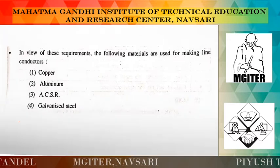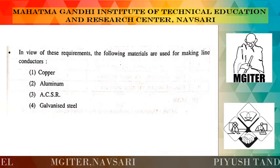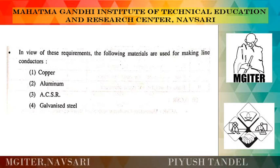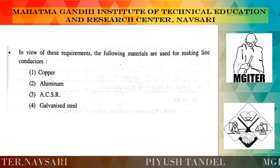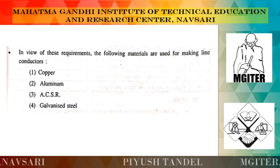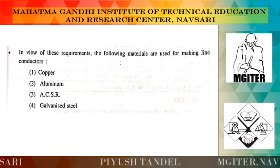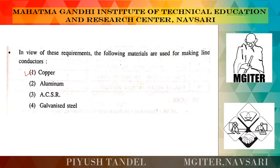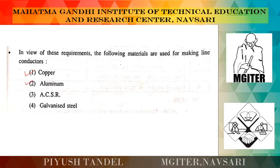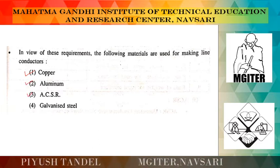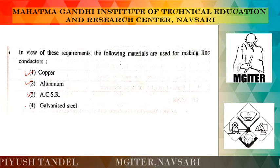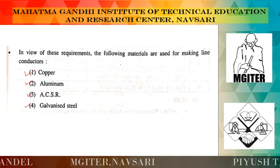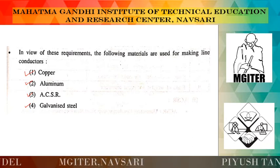Next, we are going to see the types of conductors. In view of these requirements, the following materials are used for making different conductors. There are four different materials: first, the copper conductor; second, the aluminum conductor; third, the ACSR conductor; and fourth, the galvanized steel conductor. We are going to see each and every point in detail.